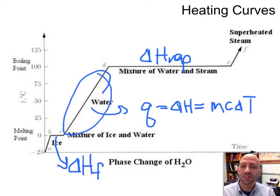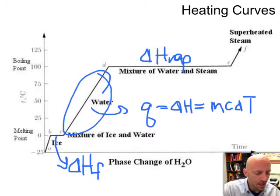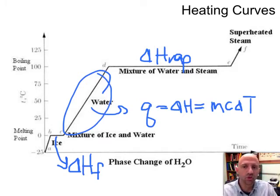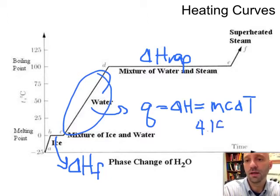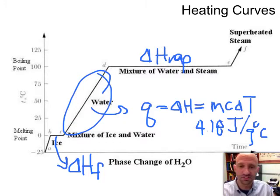Now the value of the specific heat for liquid water is a number you might sort of remember. It's about 4.18 joules per gram degree Celsius. I'll write that number down so you can at least see the unit. 4.18 joules per gram degrees C. The other values of specific heat will have the same units.